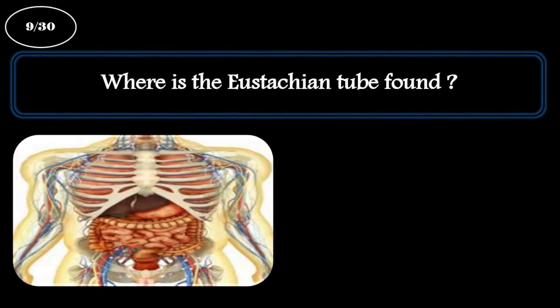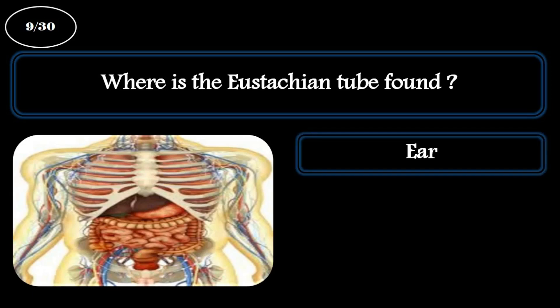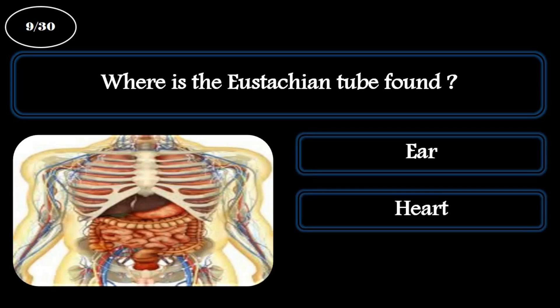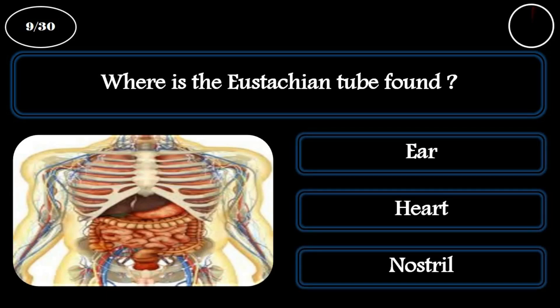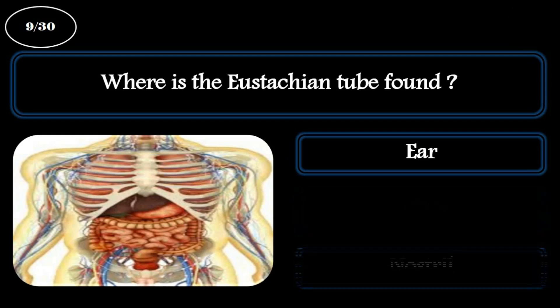Question 9. Where is the eustachian tube found? A: Ear. B: Heart. C: Nostril. The correct answer is ear.